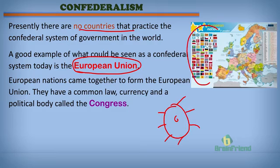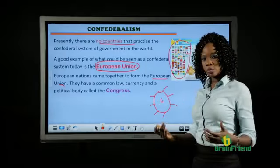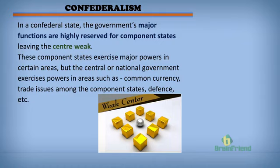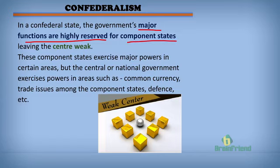The European nations came together to form the European Union and have certain things in common which they all abide by. They have a common law and a common currency. They also have a political body known as a congress where laws are made and carried out. So we can use the example of the European Union to relate confederalism to our present day. In confederalism, the major functions are highly reserved for the component states, leaving the center weak.